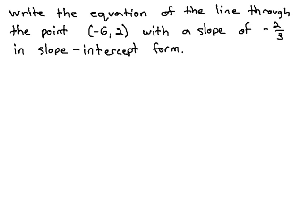In this video, we're going to take a look at finding the equation of a line in slope-intercept form. However, we are not going to be given the y-intercept. Here, we are asked to find the equation of the line through the point (-6, 2) with a slope of -2/3.